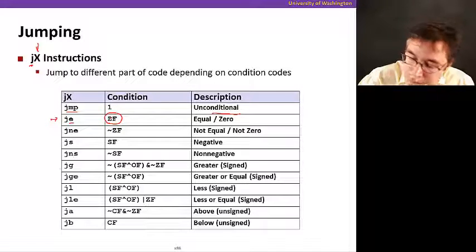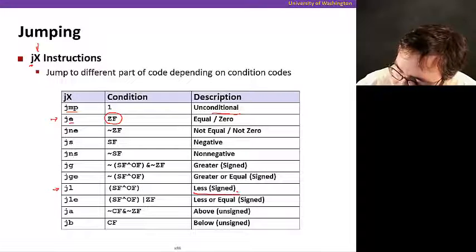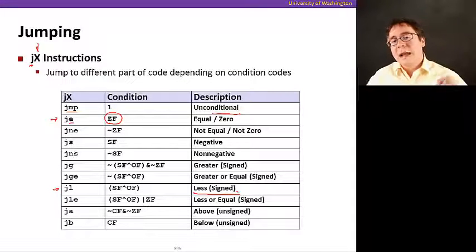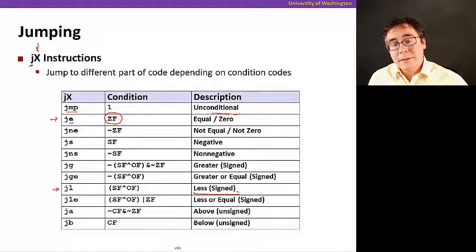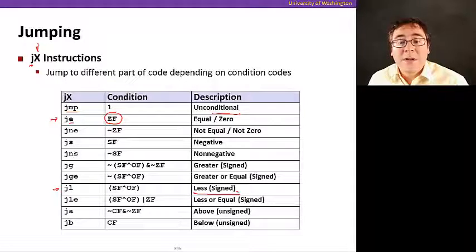Let me pick another example here. If you use jl, it's going to be jump if less than. So if you do a comparison and it turns out that it's less than, the jump's going to happen.